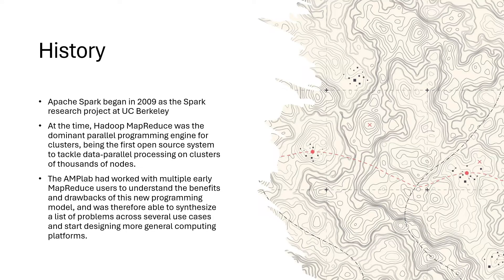First of all, let's talk about the history of why Spark was introduced. Apache Spark began in 2009 as a research project at UC Berkeley. At that point of time, Hadoop and MapReduce were very prevalent and dominant in the big data world, and it was a very good solution to processing large scale data in a distributed fashion. But like everything has its pros and cons, MapReduce also had its cons where it was not meant for iterative processing, and there were other drawbacks.